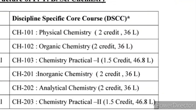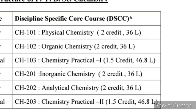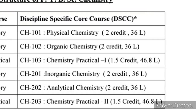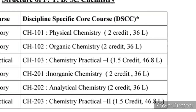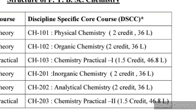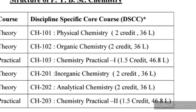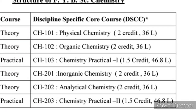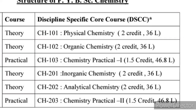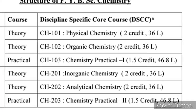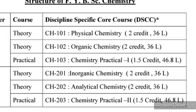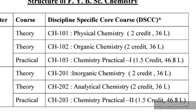In this semester there are 3 chemistry subjects. The first one is CH101 Physical Chemistry, which has 2 credits and 36 lectures. The second one is CH102 Organic Chemistry. The third one is CH103 Chemistry Practical, which has 1.5 credits and 46.8 lectures. The '1' next to CH indicates first semester.